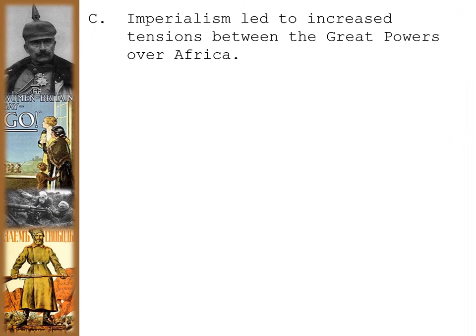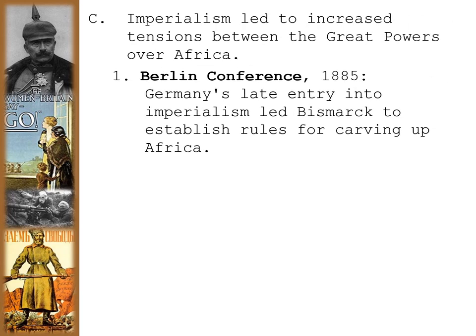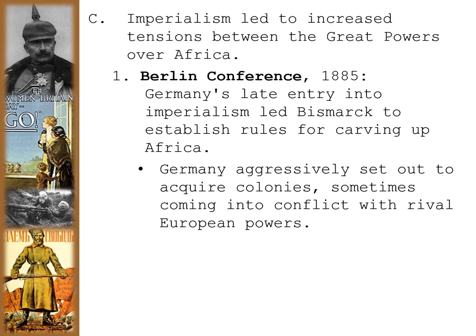A third long-term cause is imperialism itself. Imperialism led to increased tensions between the great powers over Africa. Germany's late entry into imperialism led Bismarck to establish rules for carving up Africa at the Berlin Conference of 1884-1885, hoping to avoid an all-out war. Germany aggressively set out to acquire colonies after this, sometimes coming into conflict with rival European powers — largely due to Kaiser Wilhelm II being much more aggressive than Bismarck when it came to taking territories.